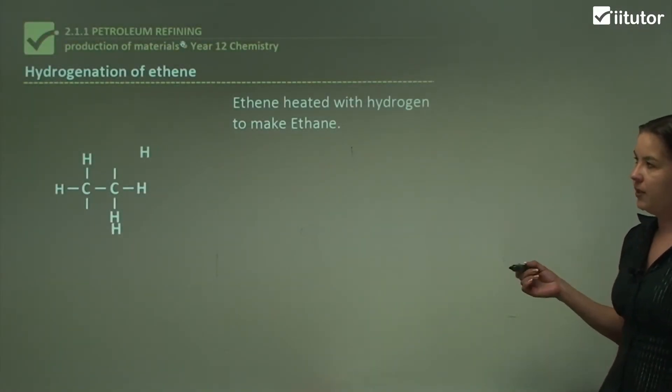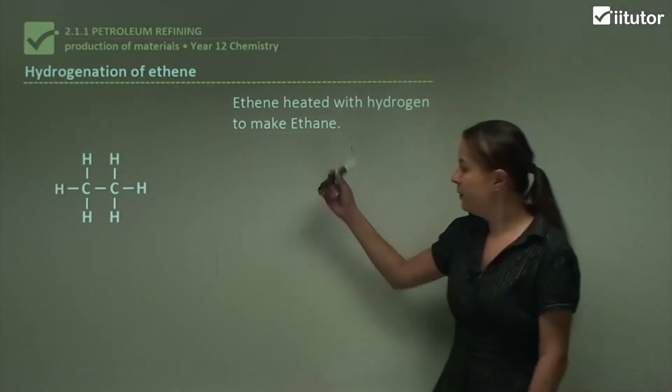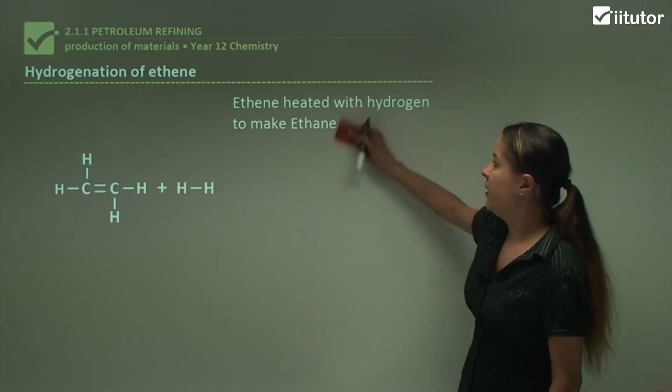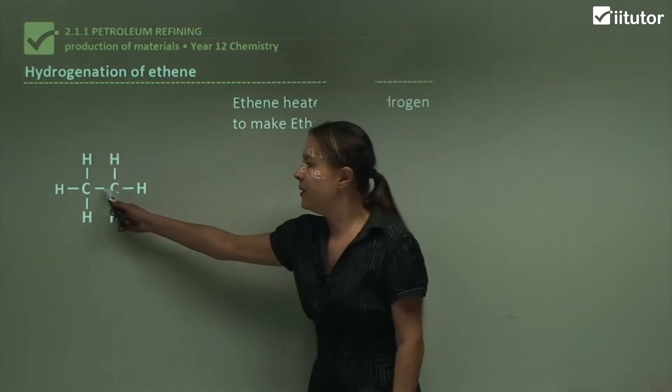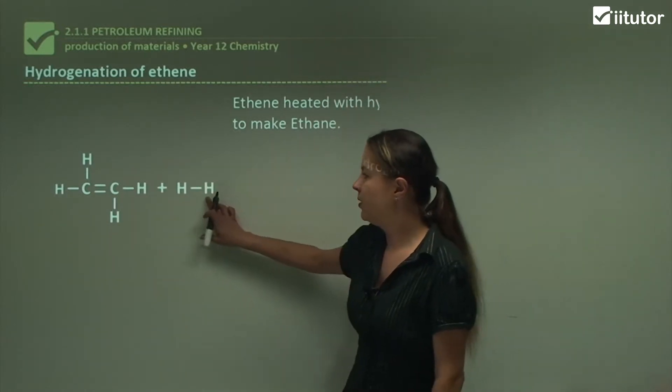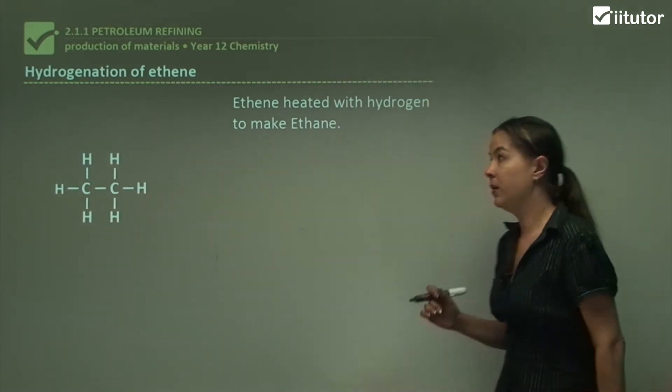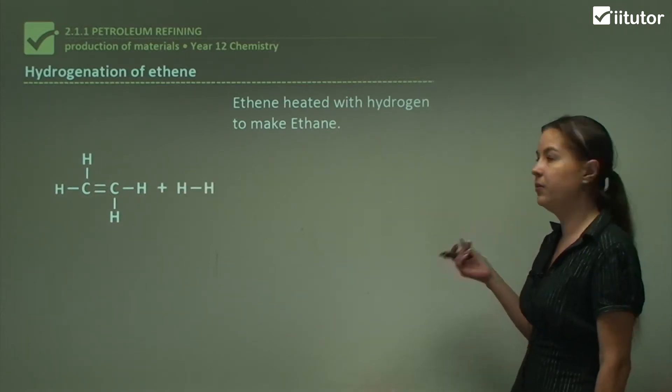Let's look at hydrogenation of ethene. We're reacting ethene with hydrogen to make ethane, breaking that double bond and the hydrogens are coming in and adding to this molecule. These are examples of addition reactions.